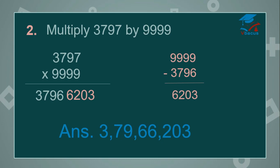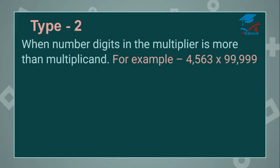It's very simple, it's a very easy trick — you can solve it in seconds. Type 2: when the number of digits in the multiplier is more than the multiplicand. For example, 4563 multiplied by 99999. Here there are 4 digits in the multiplicand and 5 digits in the multiplier. Let us see how we will multiply 4,563 by 99999.